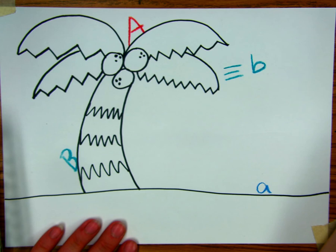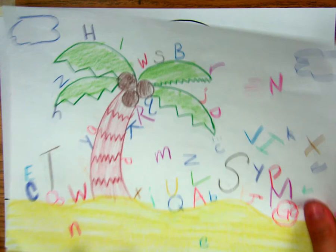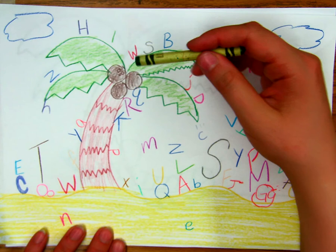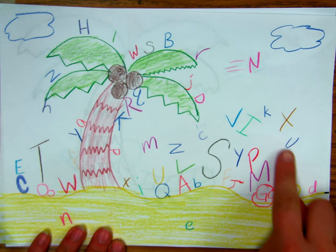And once you are done, you should have something that looks a little bit like this. Don't forget to color your leaves and your trunk and your coconuts. Let's get every letter.